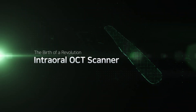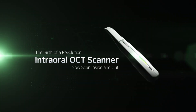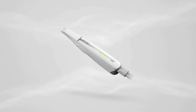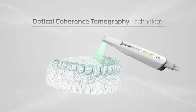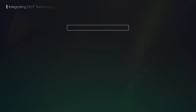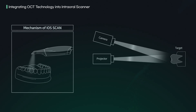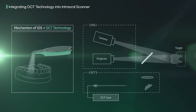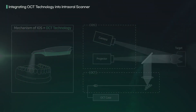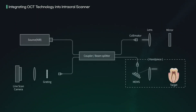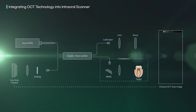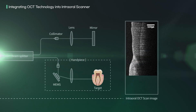Introducing an innovative scanning technology that combines an intraoral scanner with OCT technology. While conventional intraoral scanners are limited to 3D image capture, the addition of OCT scanning technology allows for precise cross-sectional imaging. OCT technology utilizes optical interference phenomena to penetrate human tissues and capture cross-sectional images, enabling the imaging of enamel and dentin layers of teeth as well as the epithelial tissues of the gums.